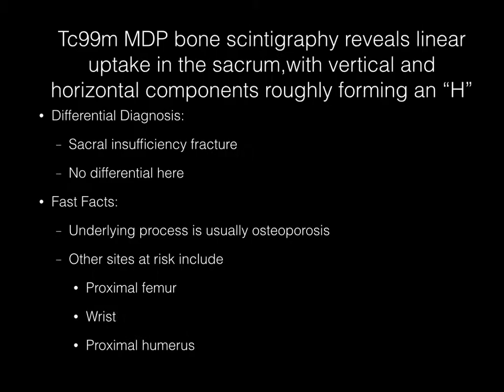This is a Technetium-99M methylene diphosphonate bone scan. The finding is linear uptake in the sacrum, with both vertical and horizontal components roughly forming an H. The diagnosis here is sacral insufficiency fracture. There is no real differential here, as this is a so-called ant mini.